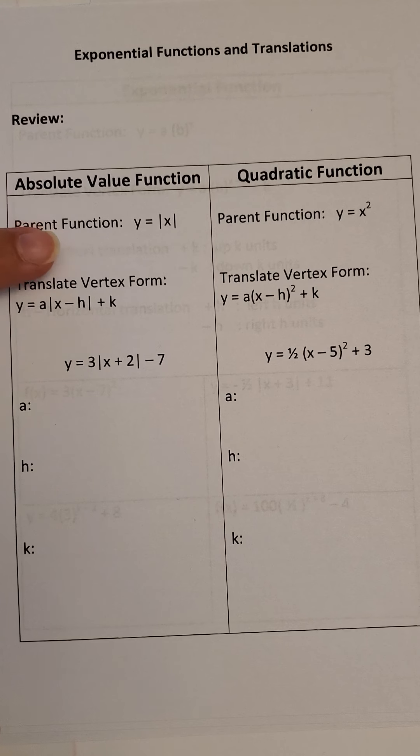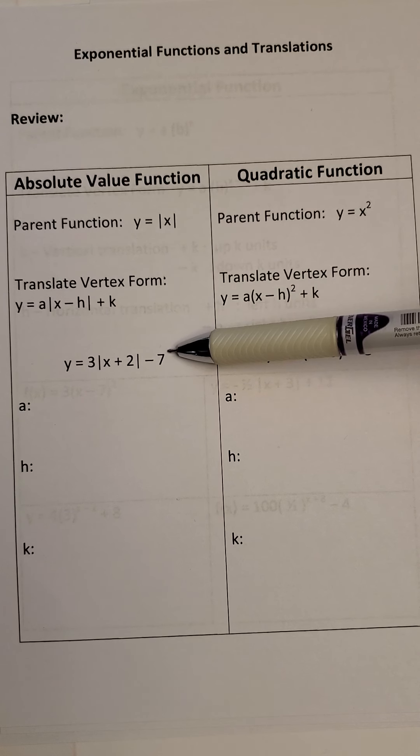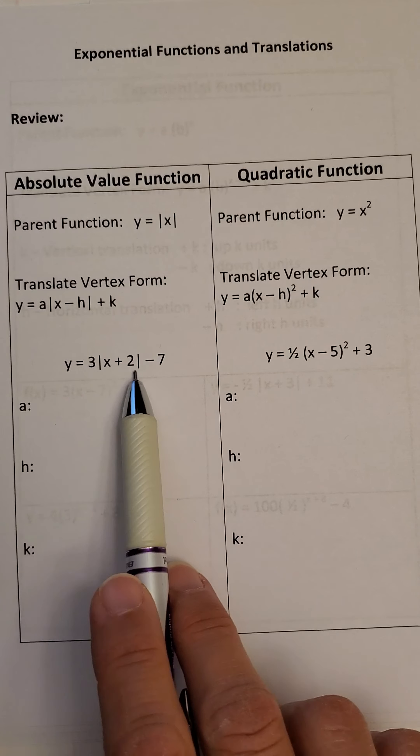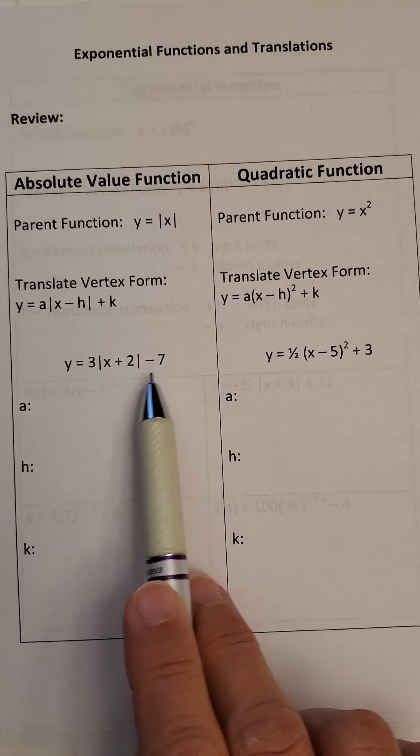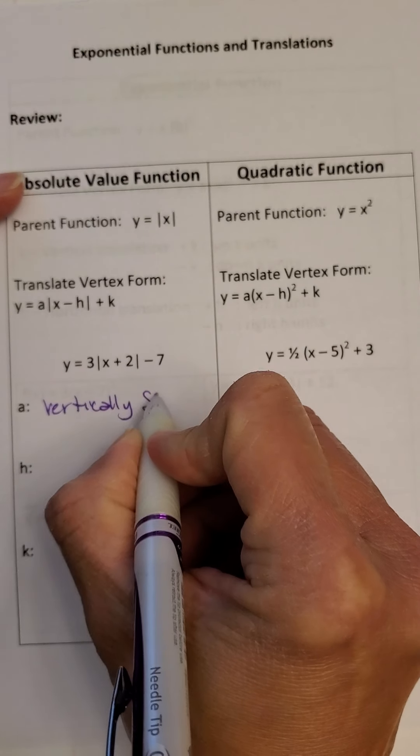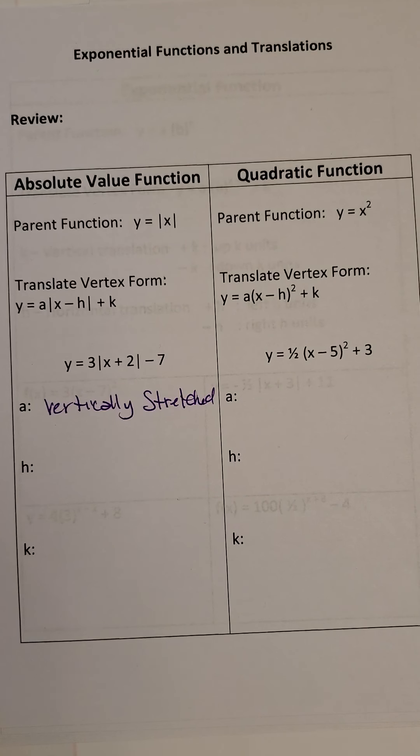So let's just review a little bit. An absolute value function has little absolute value signs, that's how you can tell it's absolute value. The translation vertex form would be an A out here. Hopefully you remember what A and H and K do. A tells us whether it's vertically stretched or vertically compressed, and it also tells us if it's reflected over the x-axis. H tells us if it's moved left or right and K tells us if it's moved up or down.